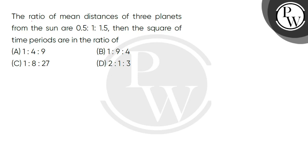Hello children, let's read the question. The ratio of mean distances of 3 planets from the sun are 0.5 is to 1 is to 1.5. Then the square of time periods are in the ratio of?